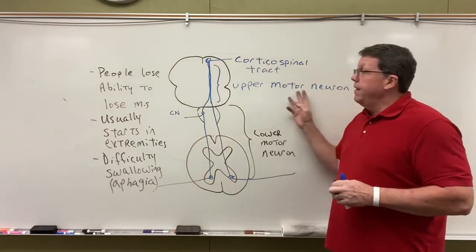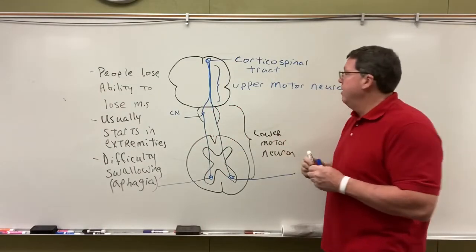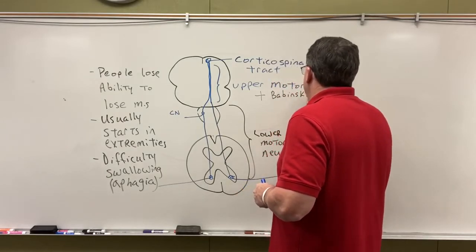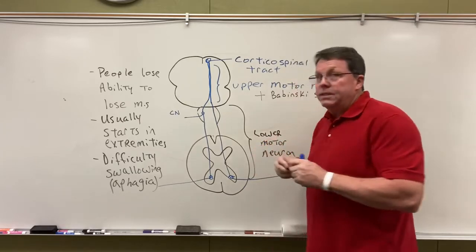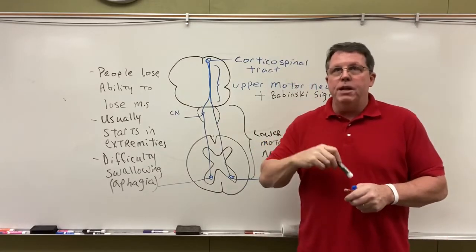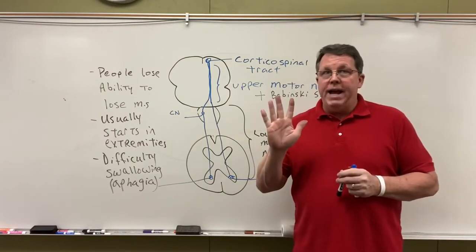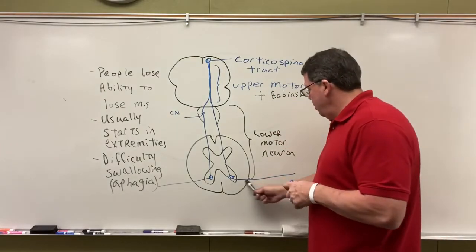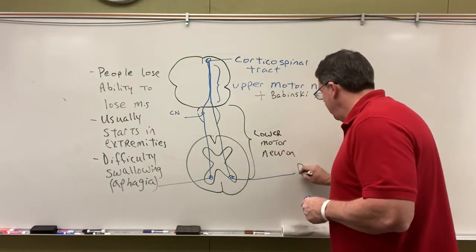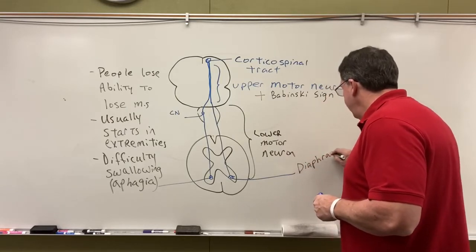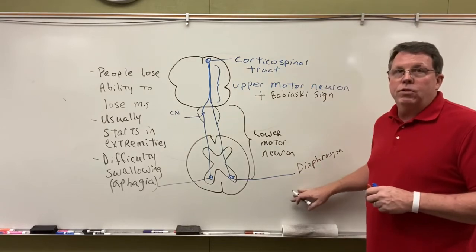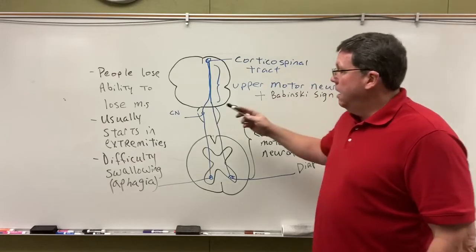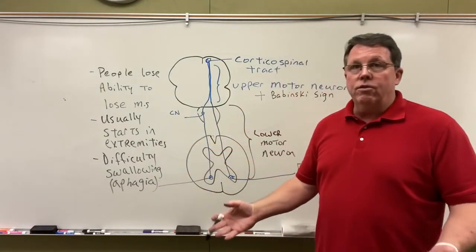When it affects the upper motor neurons, you can get spastic paralysis and what's called a positive Babinski sign — that's when you rub an object on the bottom of the foot and the toes flare back. Eventually, if the nerves going to the diaphragm or respiratory muscles get damaged, the person will no longer be able to breathe and will die from respiratory failure.